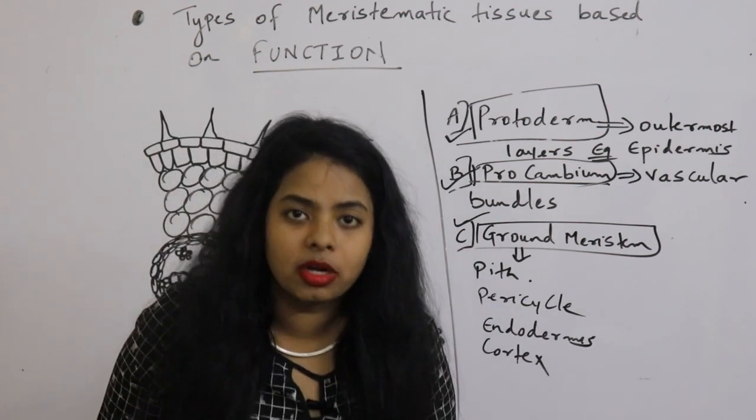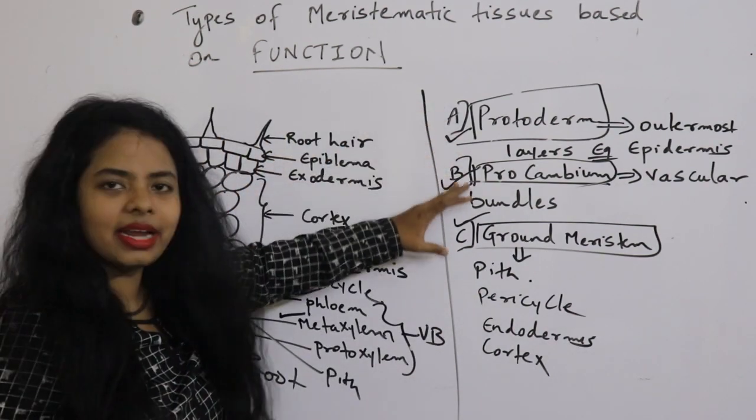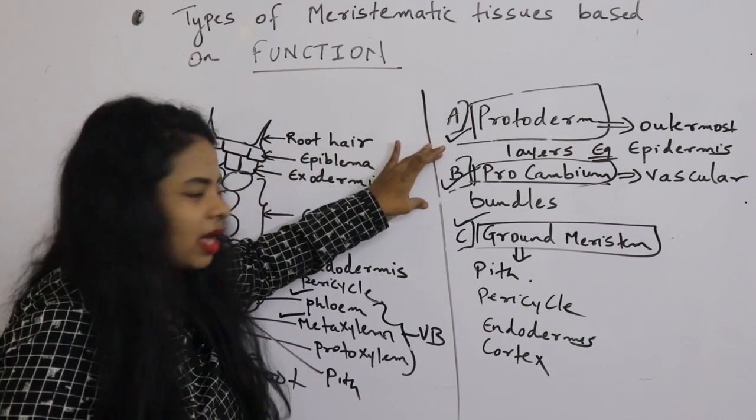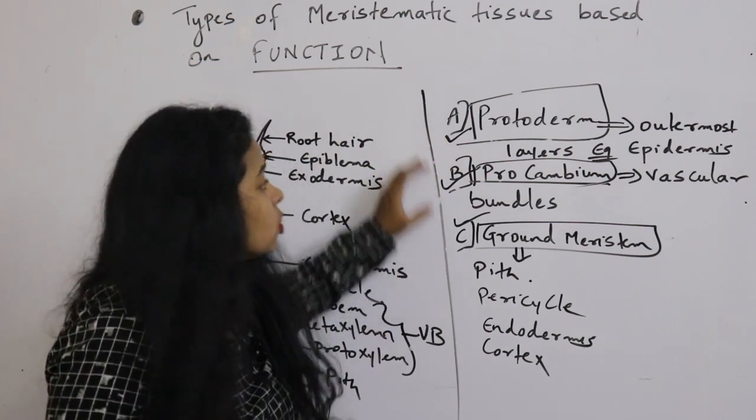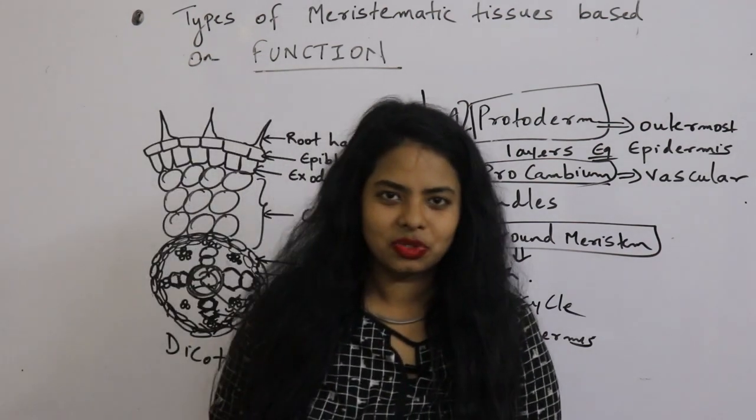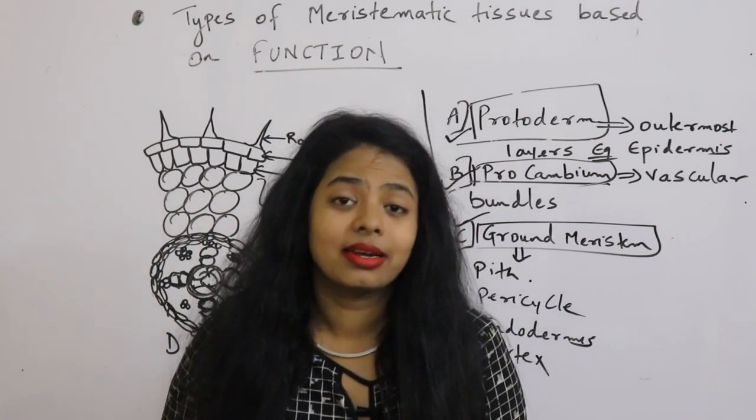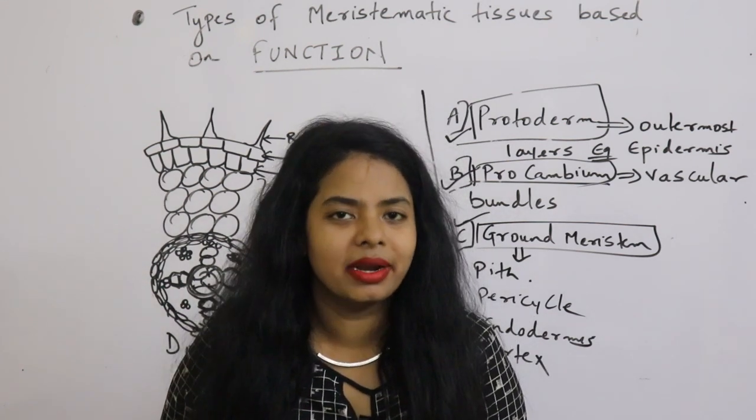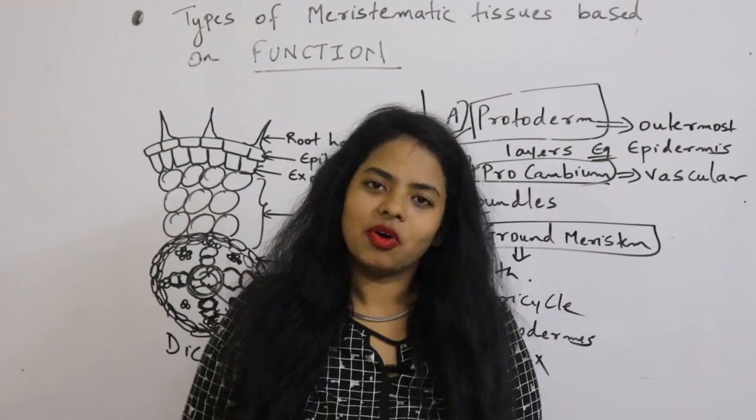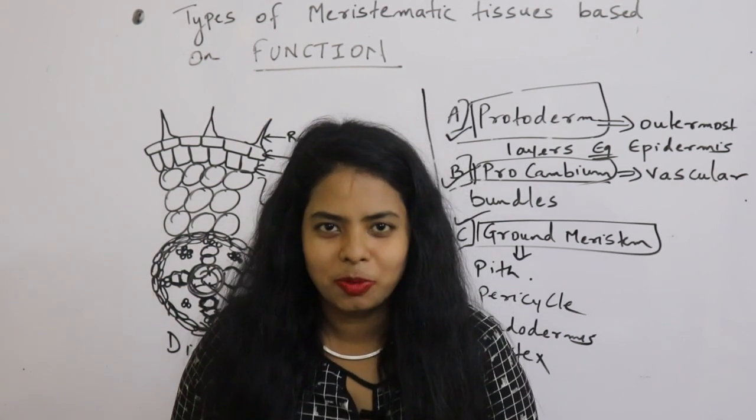In stem, it forms hypodermis, medullary rays, etc. So I hope you have understood the three types: protoderm for outermost parts, procambium for innermost, and ground meristem for the remaining. These three types are based on function. The next video will be about permanent tissues, which is very important for 11th standard. Thank you for watching my video. Please like, share, and subscribe to my channel. Thank you.